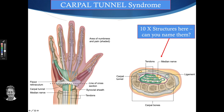Within the carpal tunnel, there are basically ten structures that pass through. You've got four tendons of the flexor digitorum superficialis, four tendons of the flexor digitorum profundus, the median nerve, and one more tendon — the flexor pollicis longus. So ten structures go through the carpal tunnel.